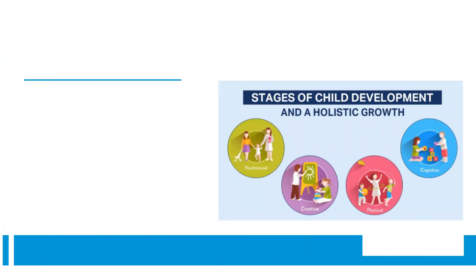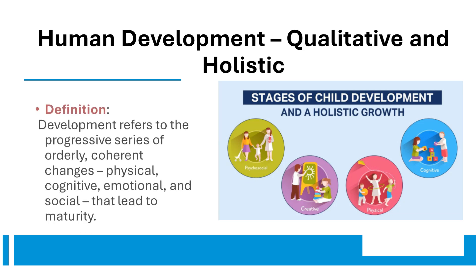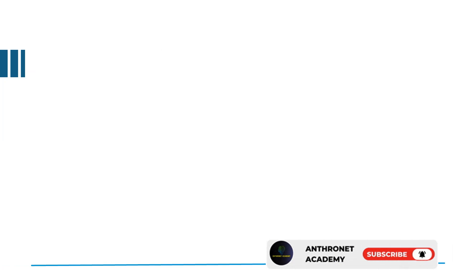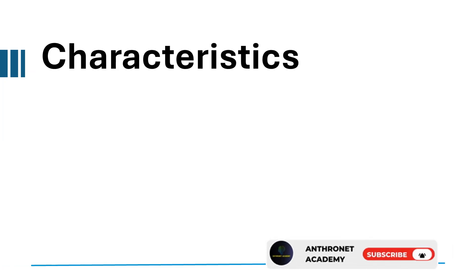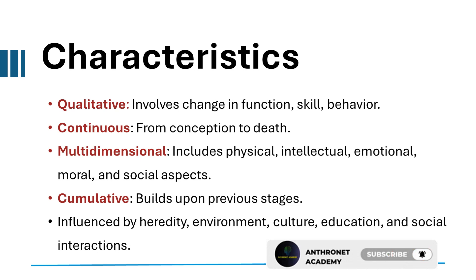Human development — qualitative and holistic. Development refers to the progressive series of orderly, coherent changes — physical, cognitive, emotional, and social — that lead to maturity. Characteristics: qualitative, involving change in function, skill, and behavior.